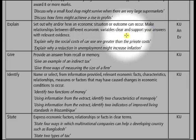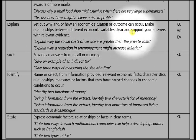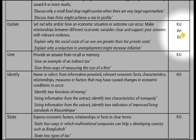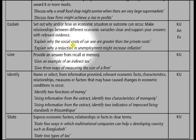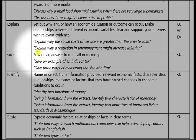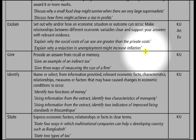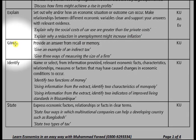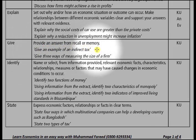The next command word is explain. It means set out why and/or how an economic situation or outcome can occur. Make relationships between different economic variables clear and support your answers with relevant evidence. This command word checks all three skills: knowledge and understanding, analysis, and evaluation. Examples: explain why the social costs of car use are greater than the private cost; explain why a reduction in unemployment might increase inflation.